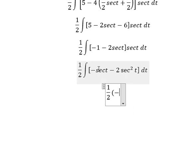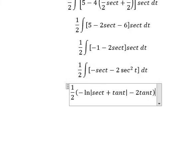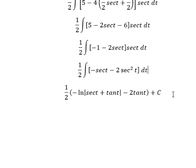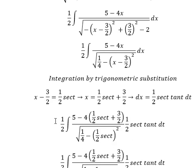Natural log of the absolute value of 2 secant of t plus tangent of t. This one we have tangent t, and we put c in here.